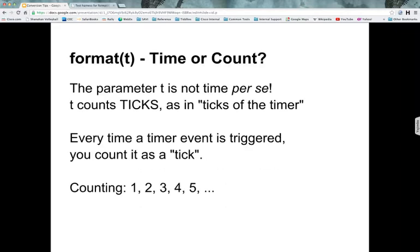So this format function that we're making for the stopwatch program, it takes in a parameter t and some people have been thinking that this is a time. Well, t is actually not a time per se, but rather it's a count of the number of ticks that the timer has fired. So every time a timer event is triggered, you count it as one tick.